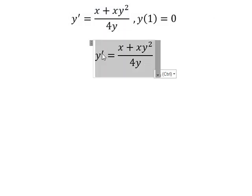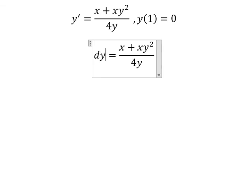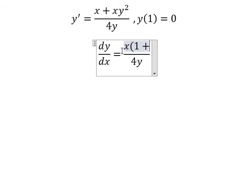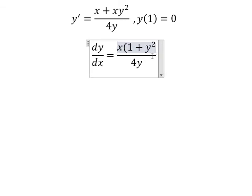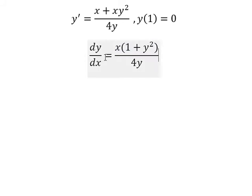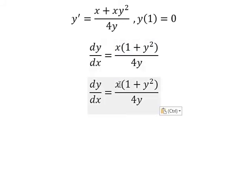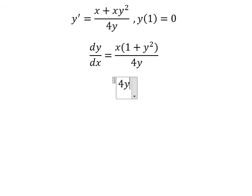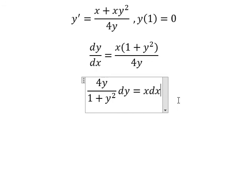This one we change to dy over dx. We can do factorization by x. So this and this we put on the left, x we put on the right. So we will have 4y over 1 plus y squared dy equals x dx.